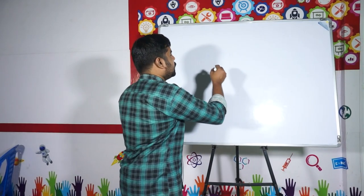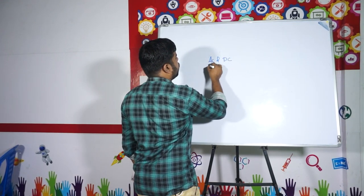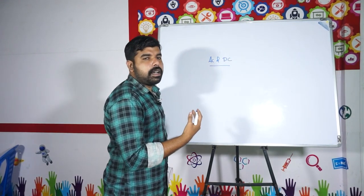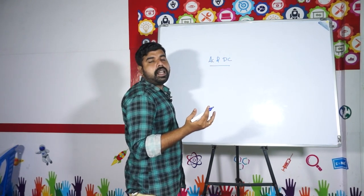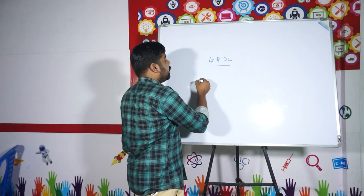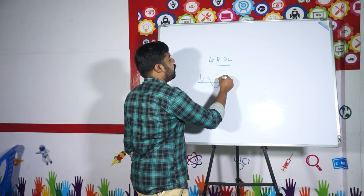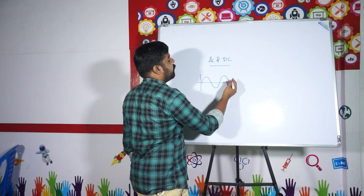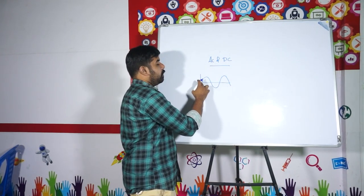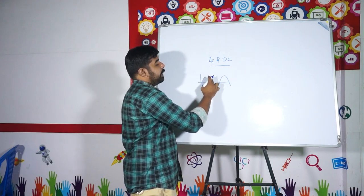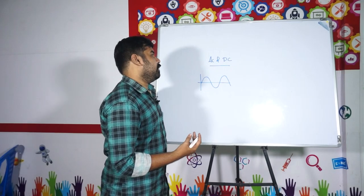What is the difference between AC current and DC current? AC is the alternating current. The full form of AC is alternating current. It is the current which varies with time — the value or the direction varies with time. This is known as AC, or alternating current.